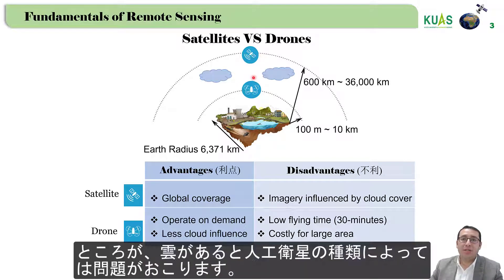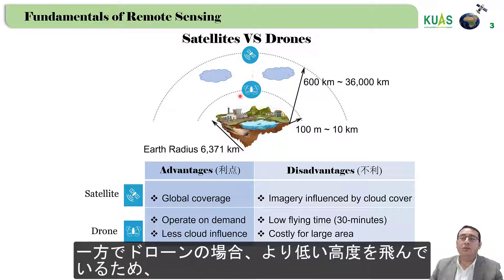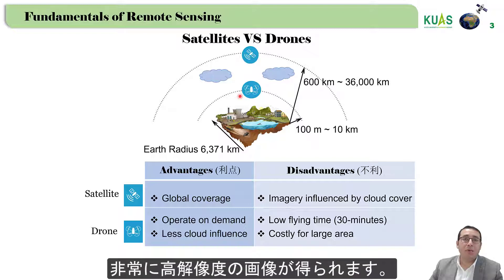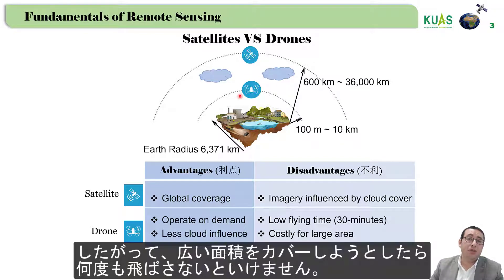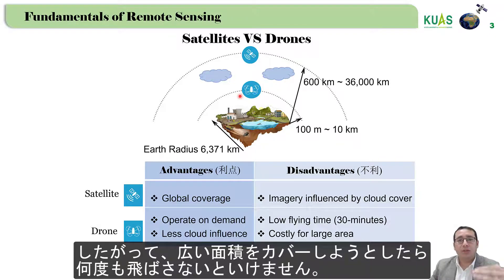However, the presence of cloud may cause some problems for satellites. In the drone case, because they fly at a lower altitude of around 100 m to 10 km, they can provide images with very high resolution. But the flight time for a drone is limited, maybe around 30 minutes, so if we need to cover a large area, we need to fly the drone several times.